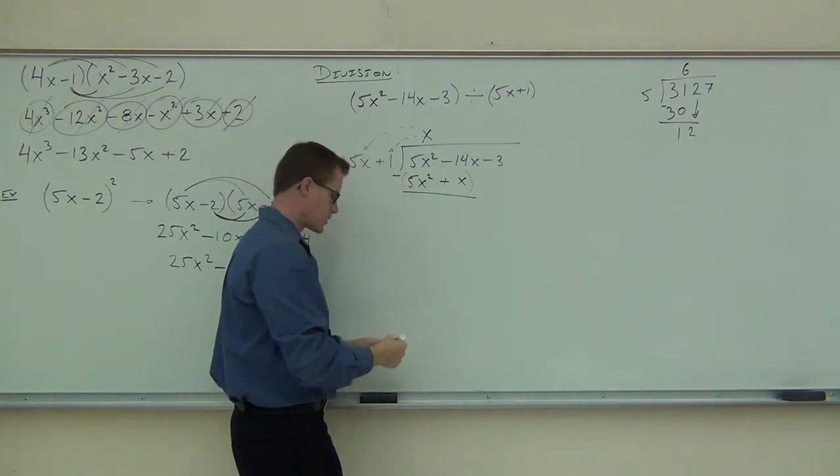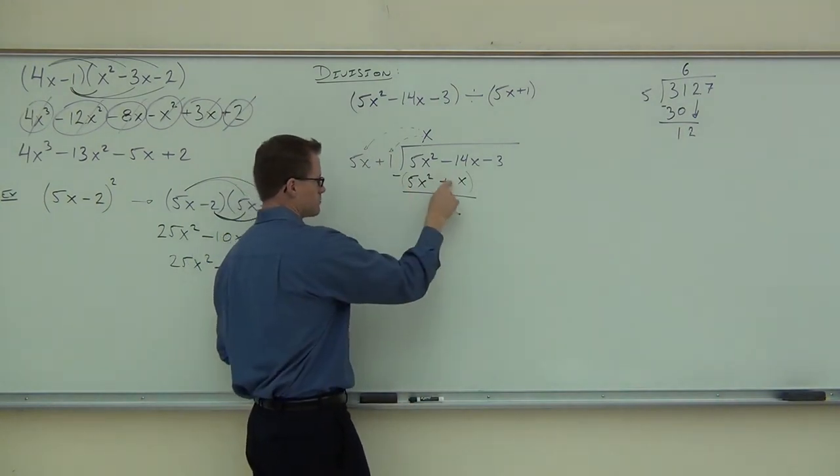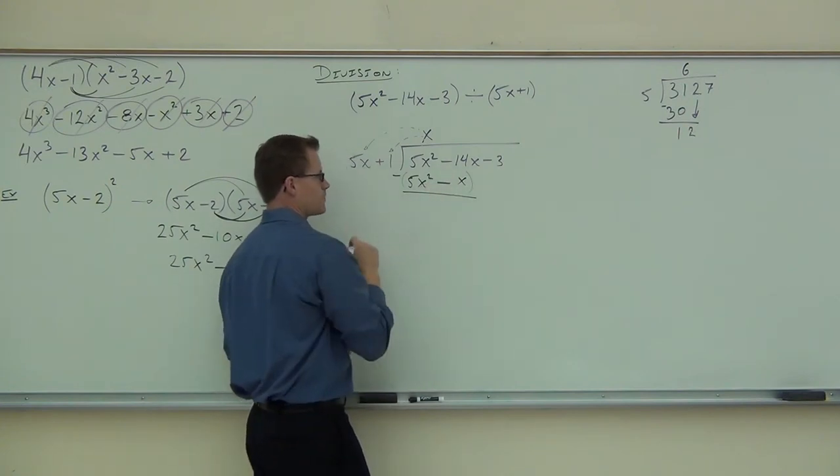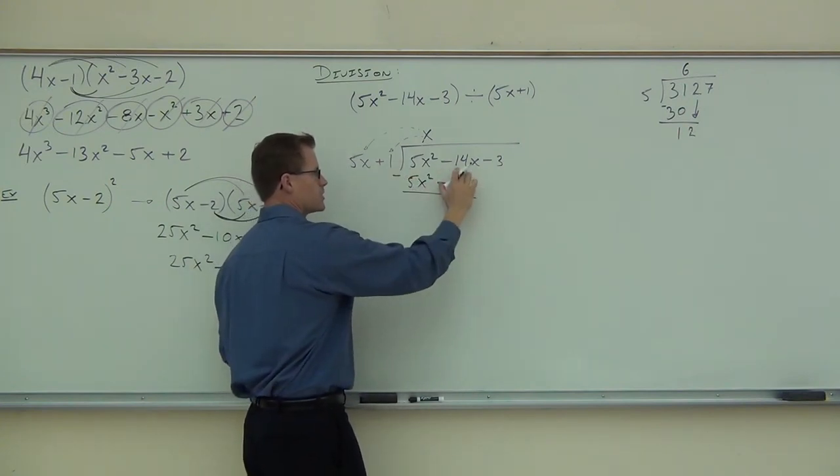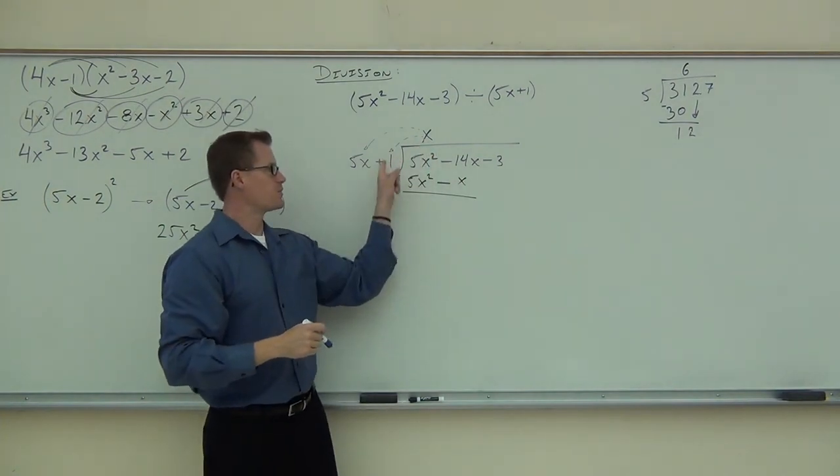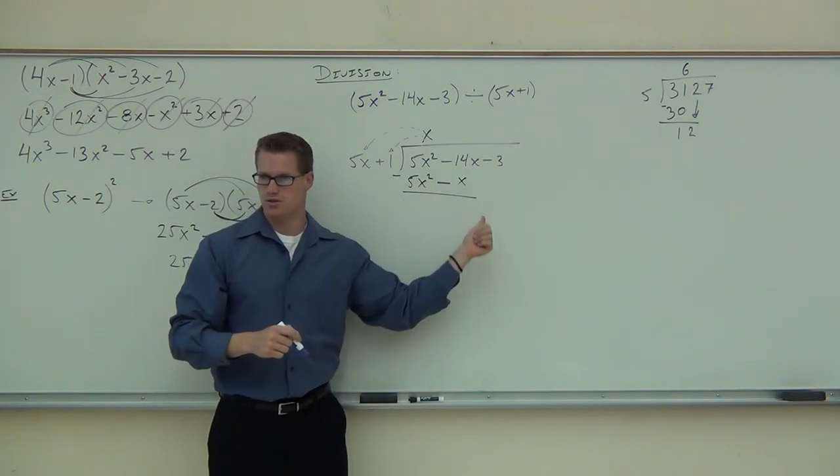I'm going to write it in purple so you can see I'm changing it. So this is going to distribute, make this one a negative. So when you ask later on your notes, Mr. Leonard, how did this change from a plus x to a minus x? It's because we're subtracting and that minus must distribute.